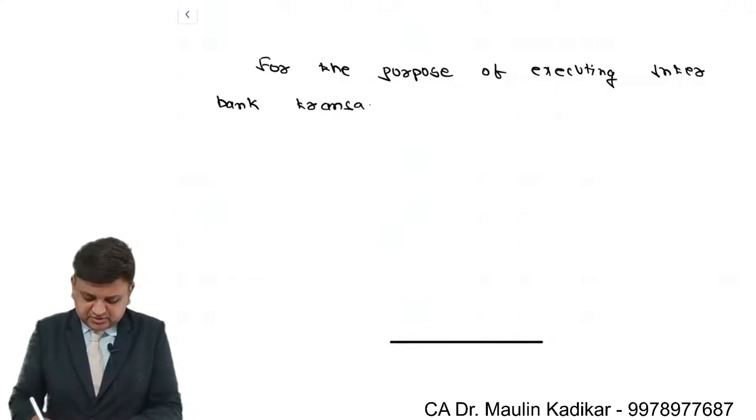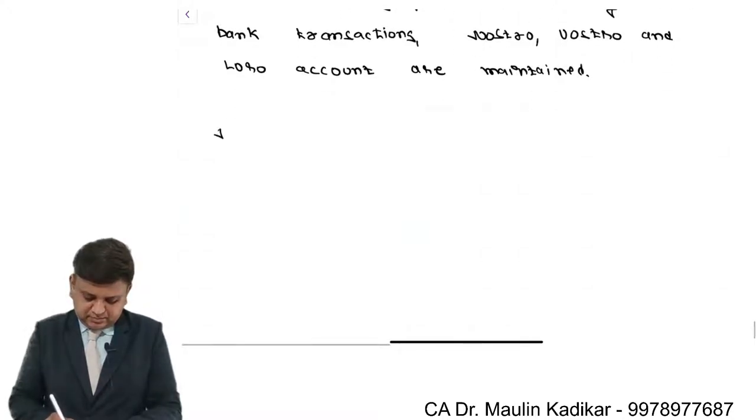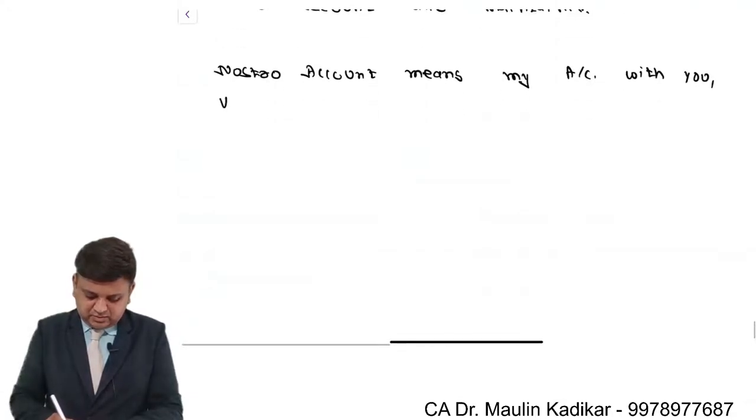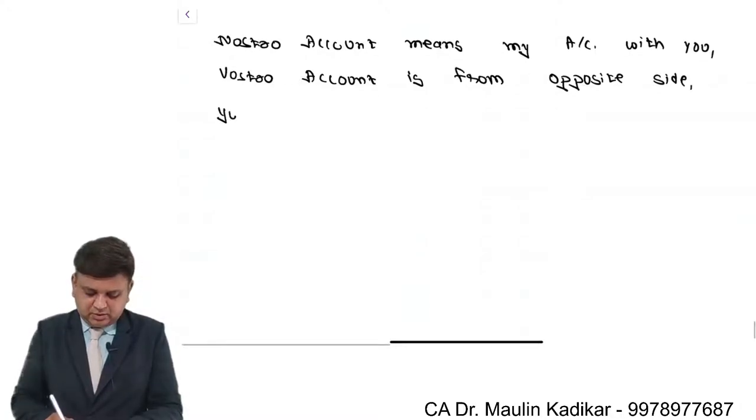For executing interbank transactions, Nostro, Vostro and Loro accounts are maintained. Nostro account means my account with you. Vostro account, from the opposite side, is your account with us.